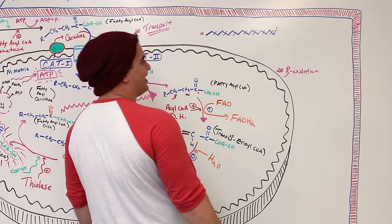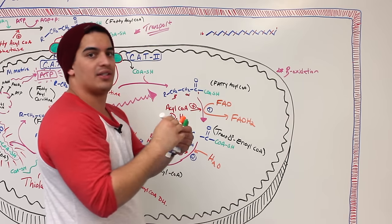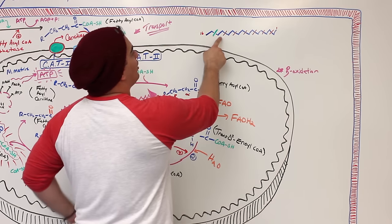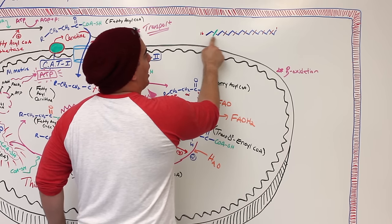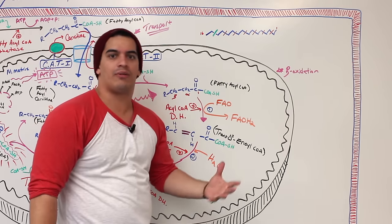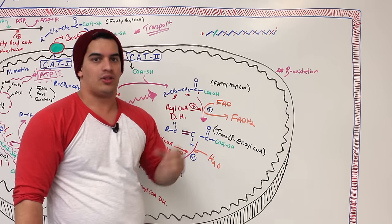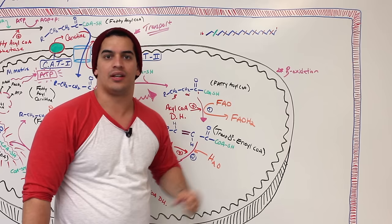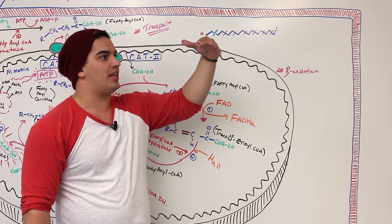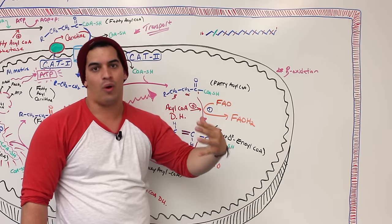To understand why it's 7 rounds: imagine drawing 16 carbons and chopping them into pairs. You make 7 cuts to produce 8 two-carbon fragments — on the 7th cut you break the last four-carbon fragment into two two-carbon fragments. The formula is: number of acetyl CoAs minus one equals the number of rounds. For a 26-carbon fatty acid: 26 ÷ 2 = 13 acetyl CoAs, minus 1 = 12 rounds of beta oxidation.